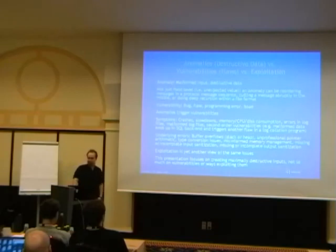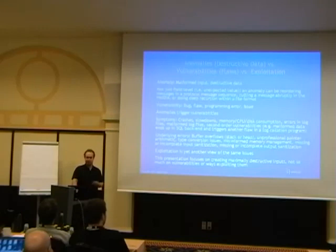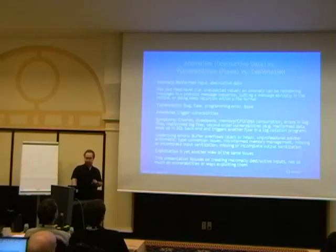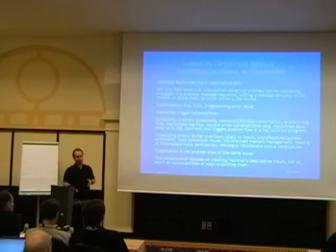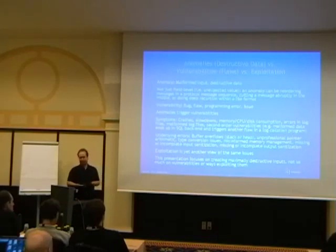Or do things like cut a file or message abruptly in the middle — make a valid file or message and then suddenly cut it from a location somewhere within. Or do things like deep recursion for a file format that allows that. It doesn't have to be that you're fuzzing a single field or single element. You should think of anomalies in a wider way — think of sequences as well, substructures you can undermine, and combining things: anomalizing not just one field, but multiple things in a message at the same time.